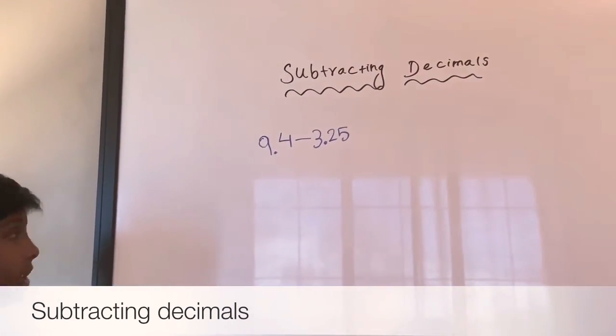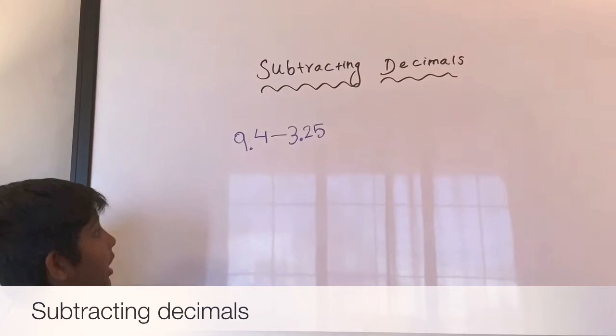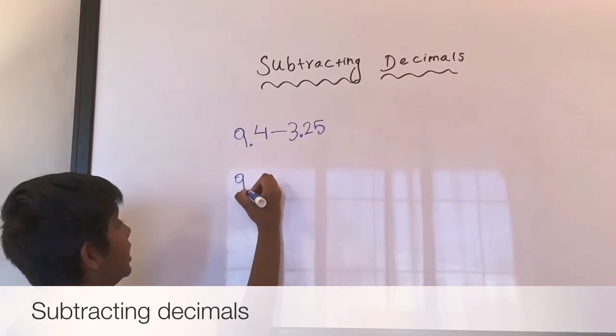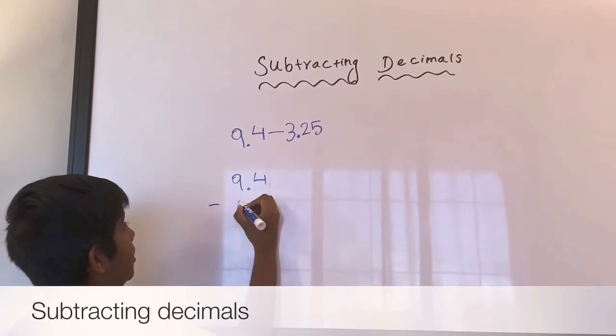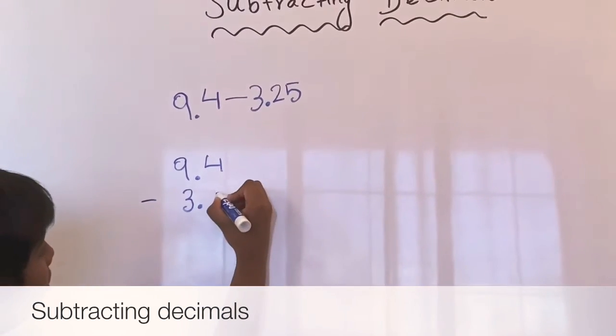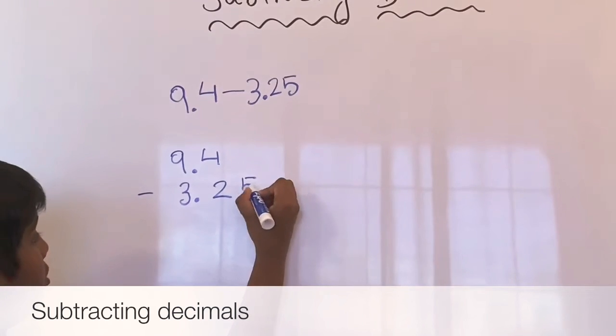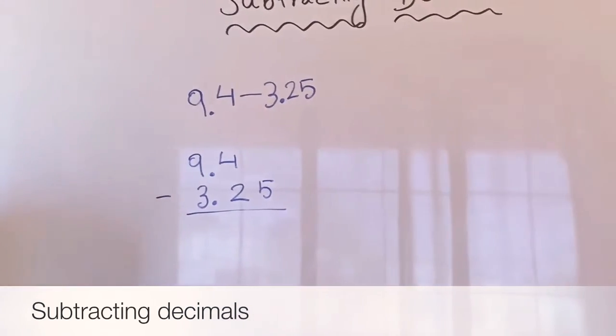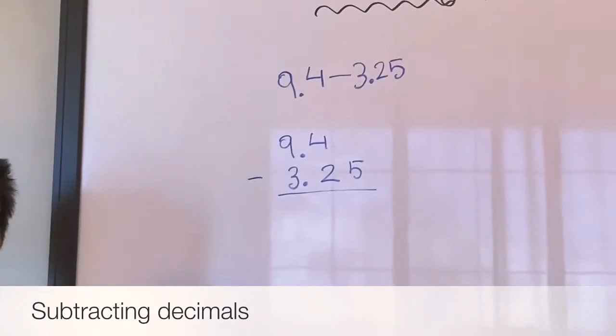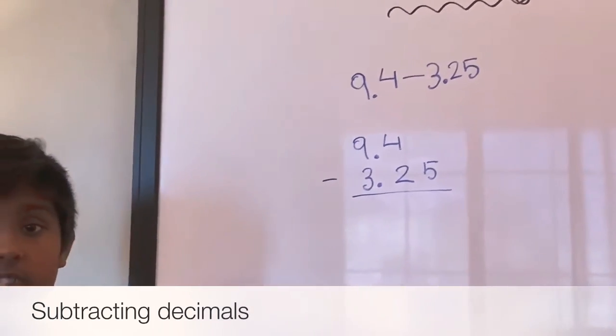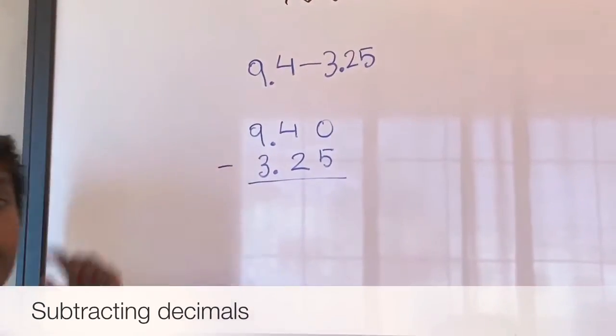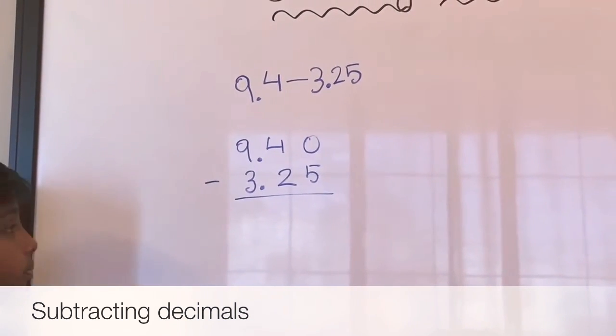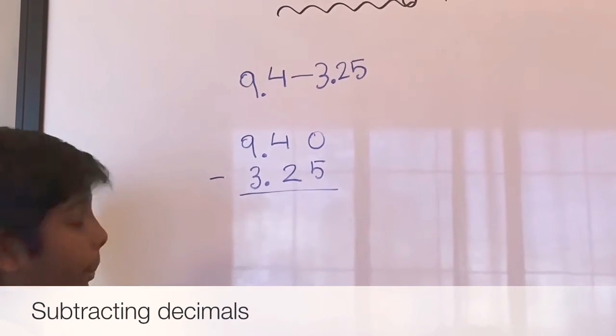Now let's line up these decimals. But to make it easier, whenever there's a missing number we can put zero. There's a missing number after five so we can put zero. Now we just need to subtract it.